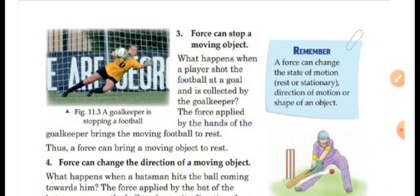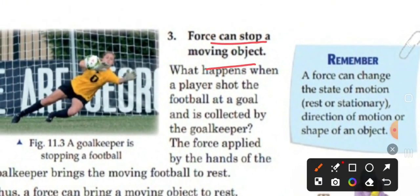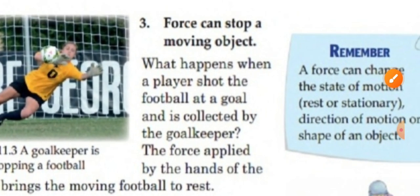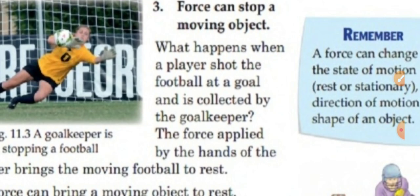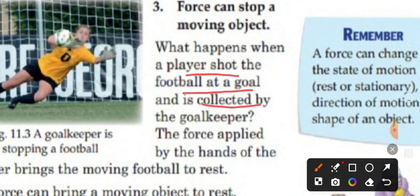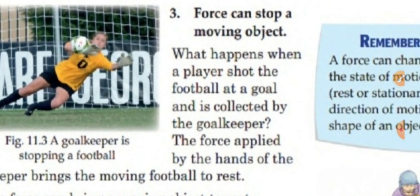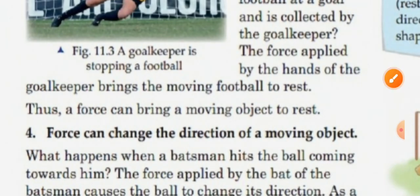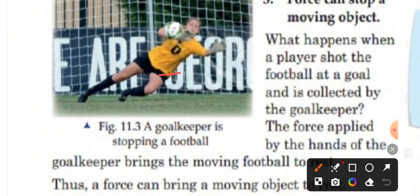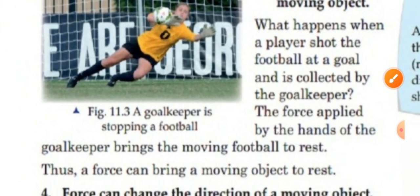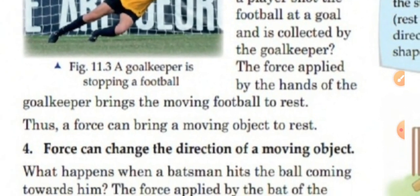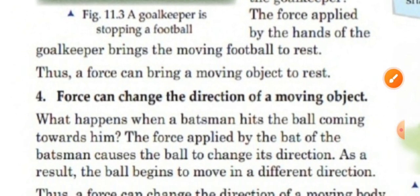The third effect of force is that it can stop a moving object. As we observed in the cricket example, when a fielder catches the ball and applies force in the opposite direction, the ball comes to rest. Similarly, when a footballer shoots at goal and the goalkeeper uses his hands to stop the ball, the force applied by the goalkeeper brings the moving football to rest. Force can bring a moving object to rest.